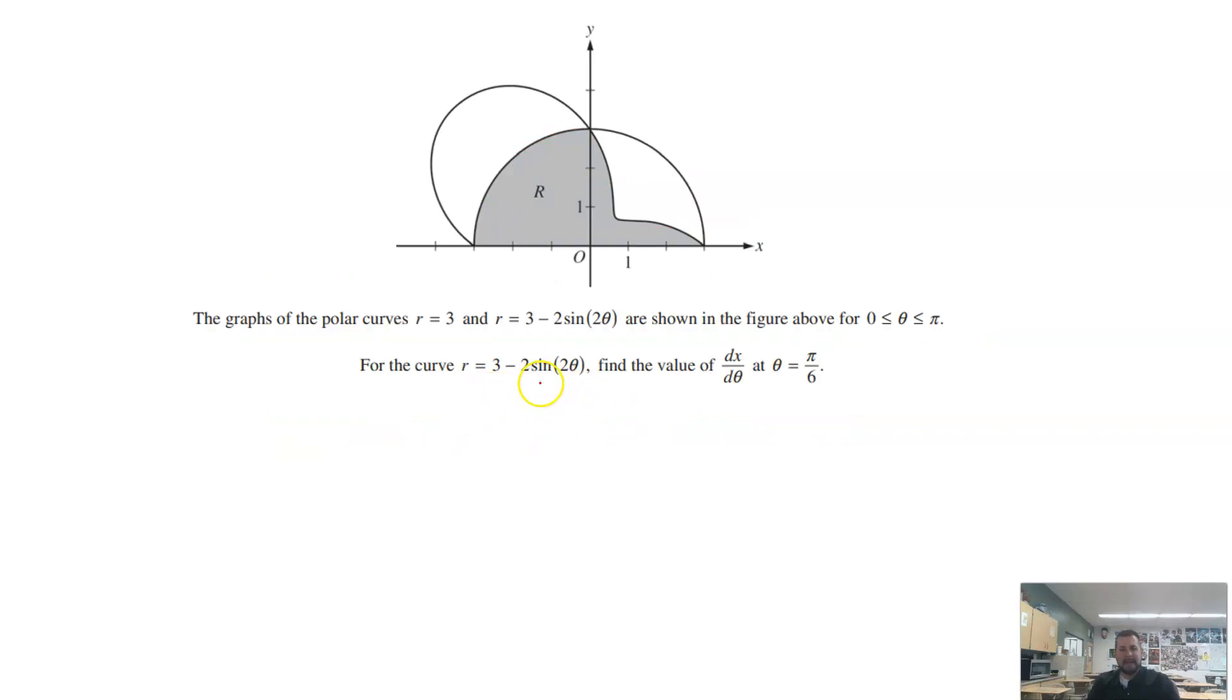Now letter B says, I've got this curve, and I want to find dx d theta. Well, in order to do that, we have to remember that x is equal to r times theta, and our r in this case is 3 minus 2 sine of 2 theta. So we've got that multiplied by theta. Now I want to take the derivative of that and plug in pi over 6. We have our calculators to do that. So when I find dx d theta at that particular point, I don't need to actually take the derivative of this because I have my calculator. I get negative 2.366. That's your answer for letter B.